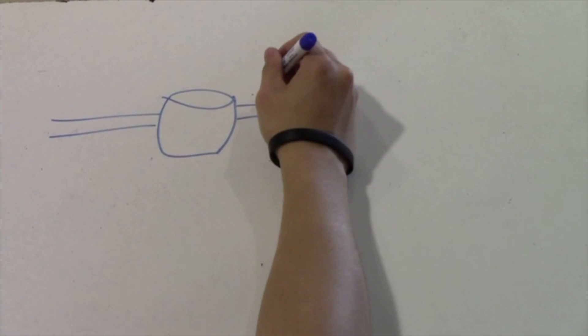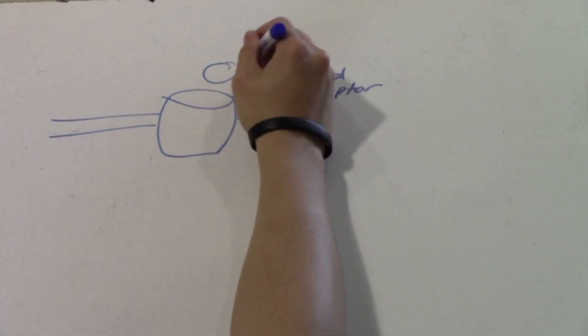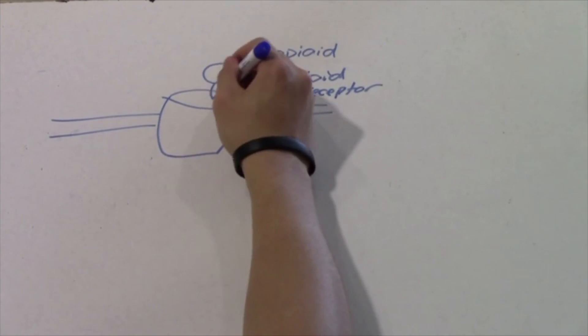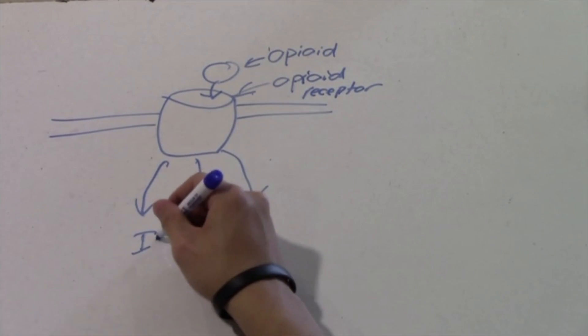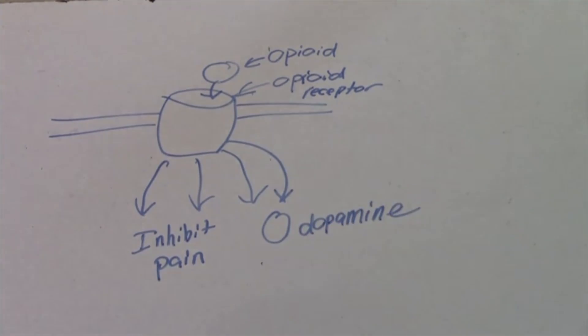Opioids have opioid receptors. These opioid receptors are G-protein coupled receptors that use opioids as ligands. The opioid ligand would bind to the opioid receptor and create numerous signals in the cell that will lead to things like inhibiting pain and releasing dopamine. Now that I know some basic knowledge about opioids like morphine, I think my next question is going to be how much morphine is ideal and how long do the effects last until the pain threshold returns back to normal.